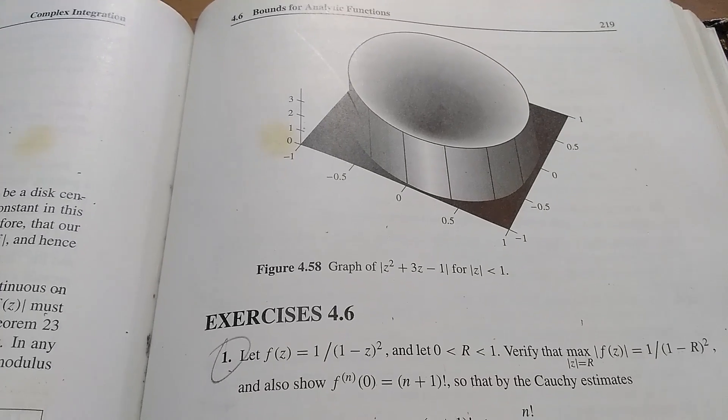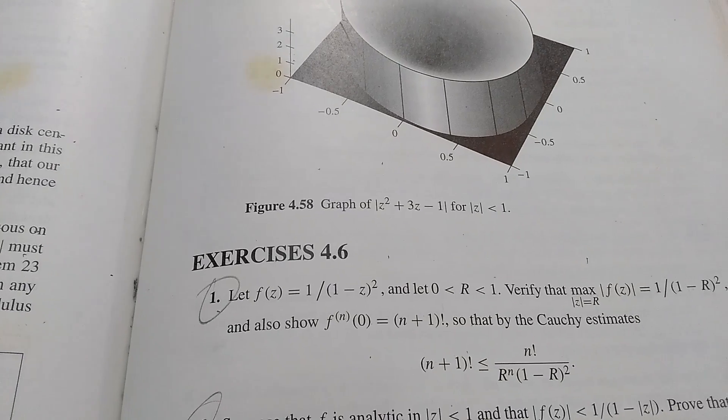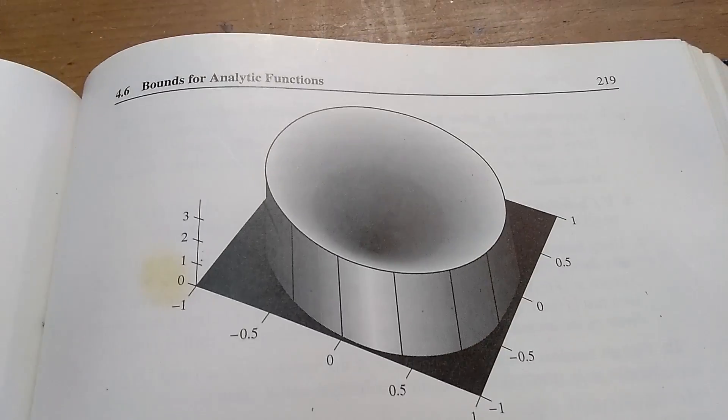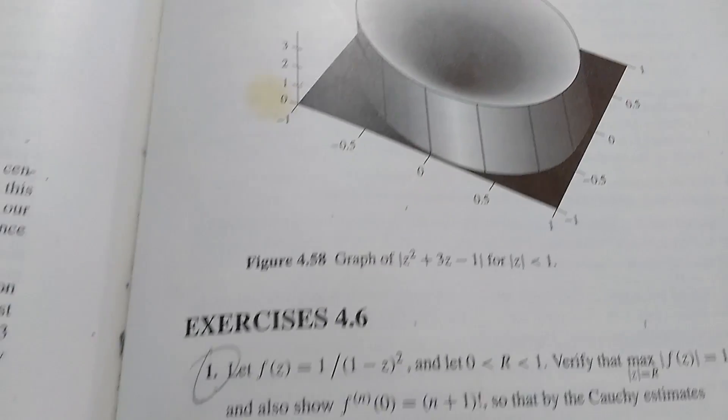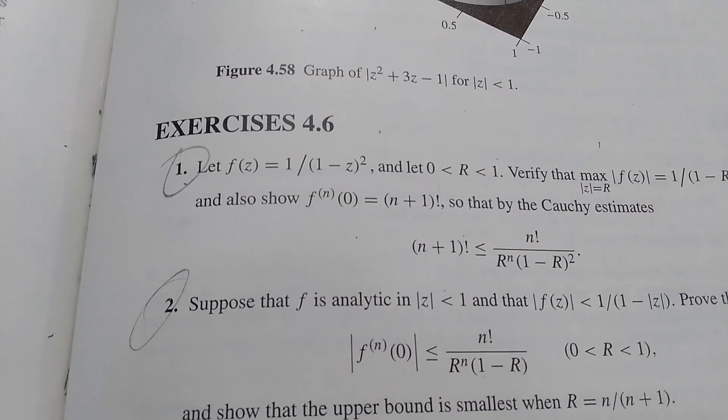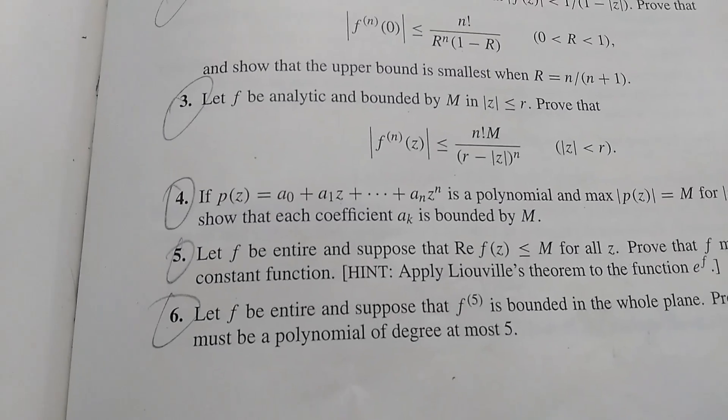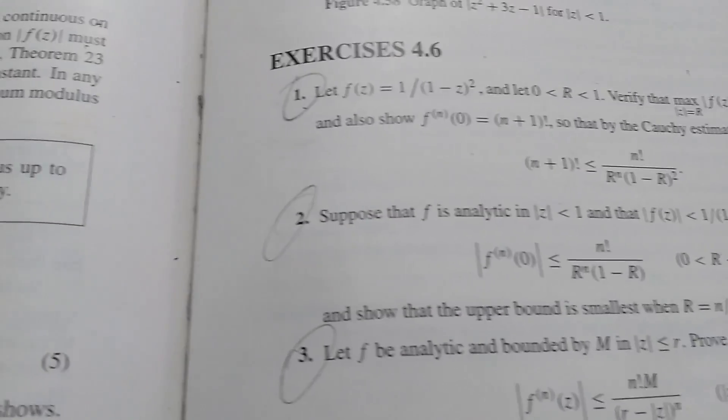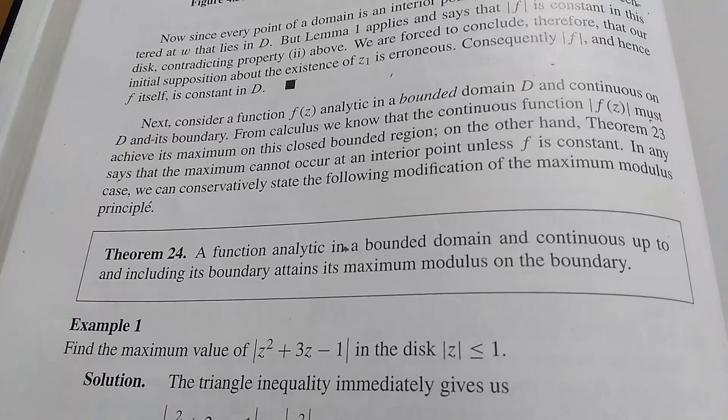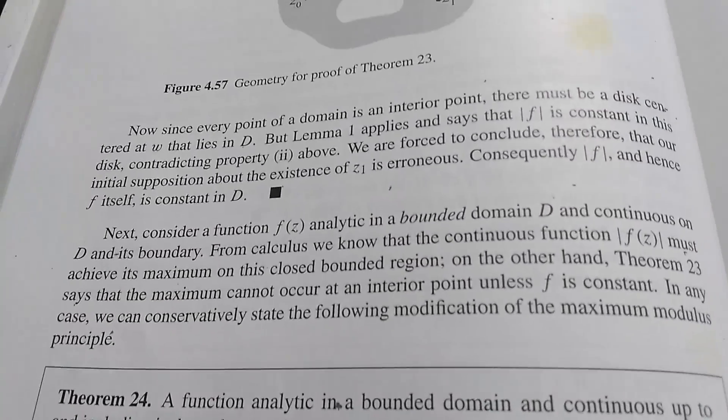And again, the exercises in this book are totally doable. This is 4.6, which is on bounds for analytic functions, and looks like I did the first six problems. They're all circled, every single one. So if I could do it, you could do it, right? And again, the readability is quite good. It's a really good complex analysis book.